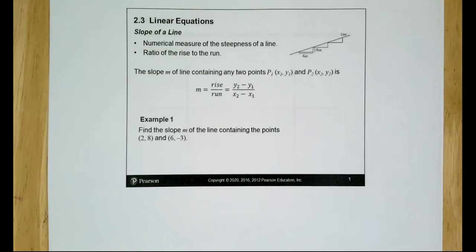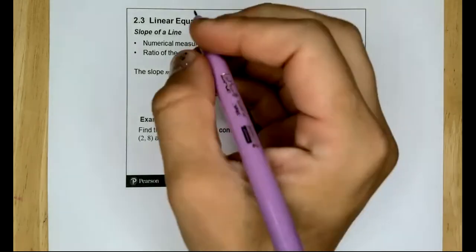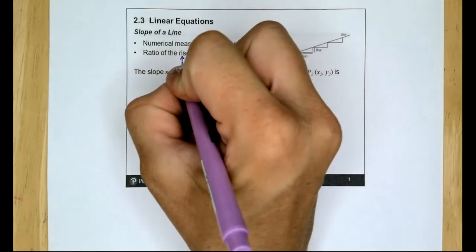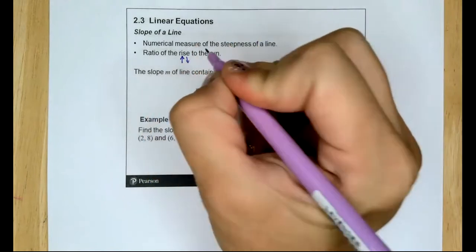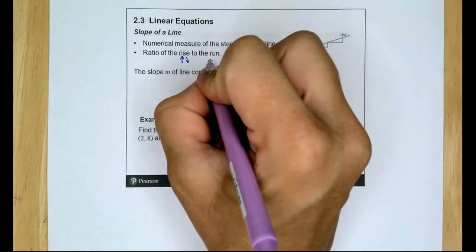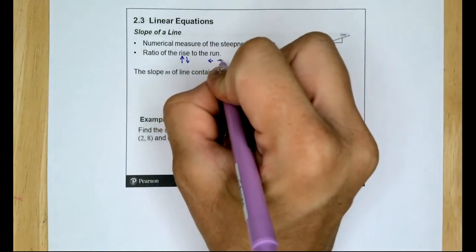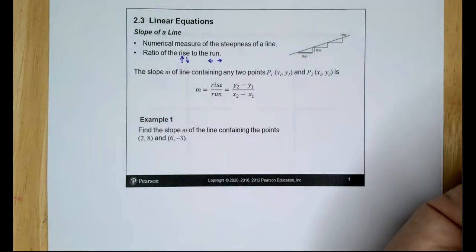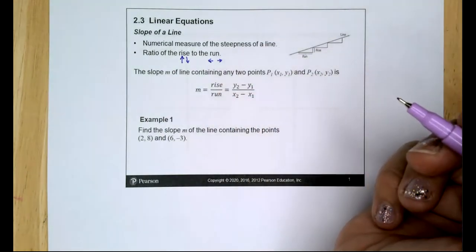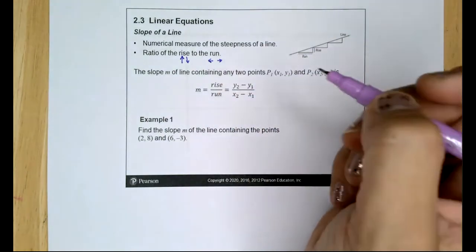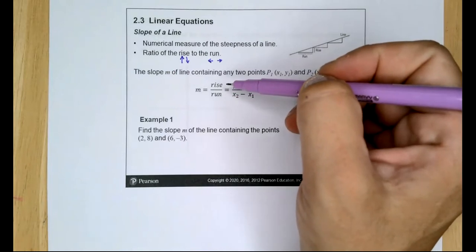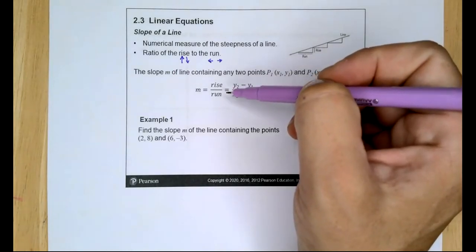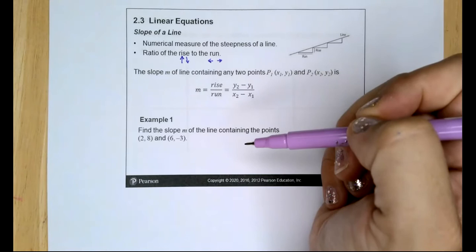The slope of a line is a numerical measure of the steepness of a line, or the ratio of the rise to the run. Rise can be up, or a negative rise would be down. The ratio is a fraction — we put the rise on top, in the numerator, and the run is the denominator.